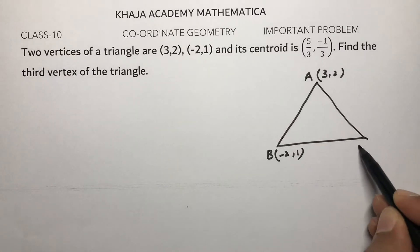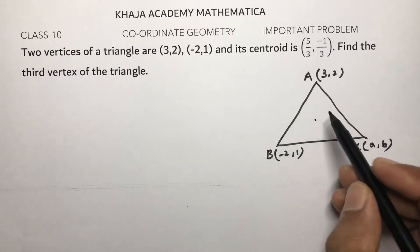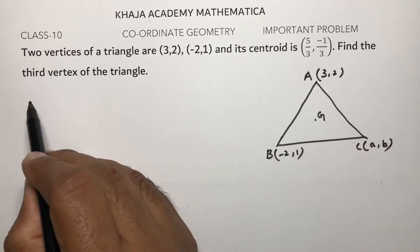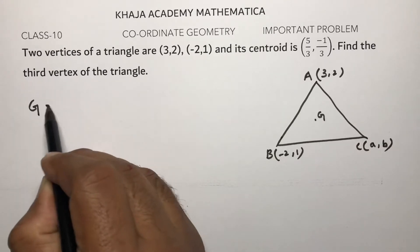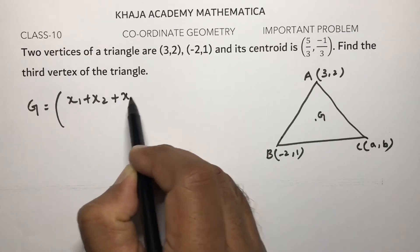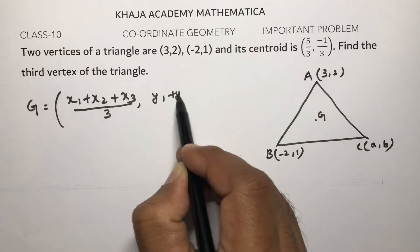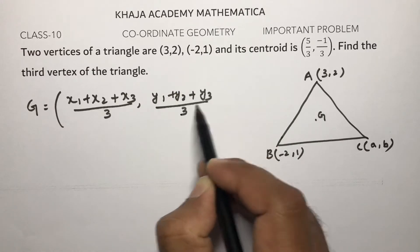Two vertices: A(3,2), B(-2,1), and C I will consider as (a,b). I need to find C whose centroid is given. So centroid formula is nothing but (x1 + x2 + x3)/3, (y1 + y2 + y3)/3.